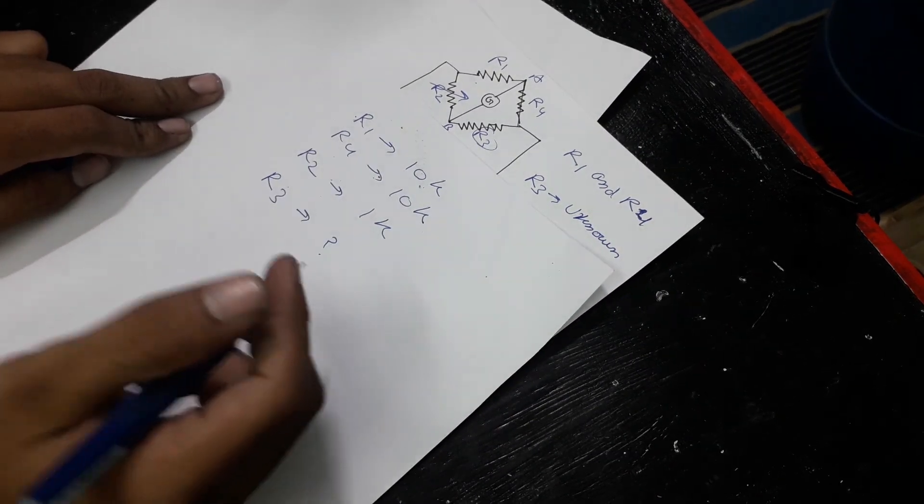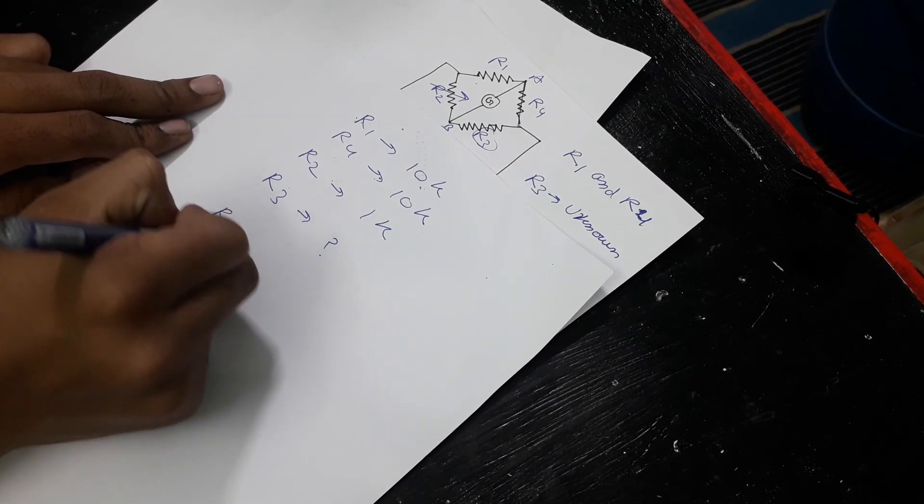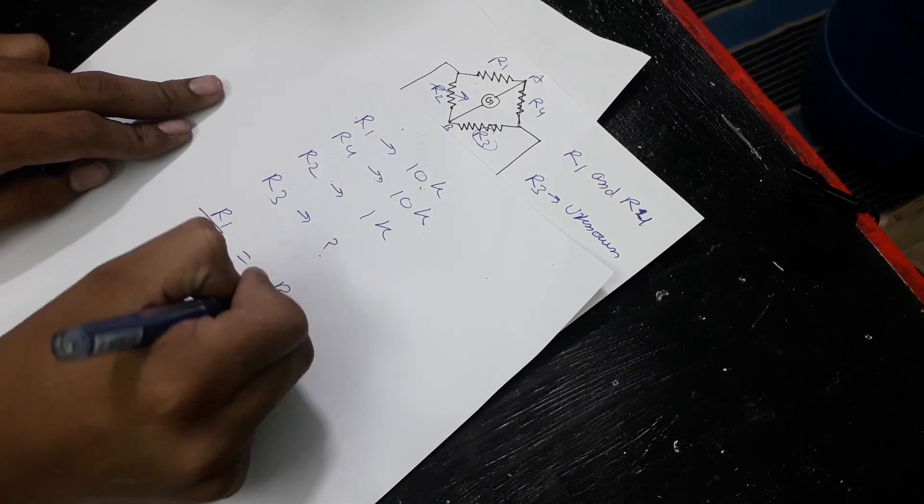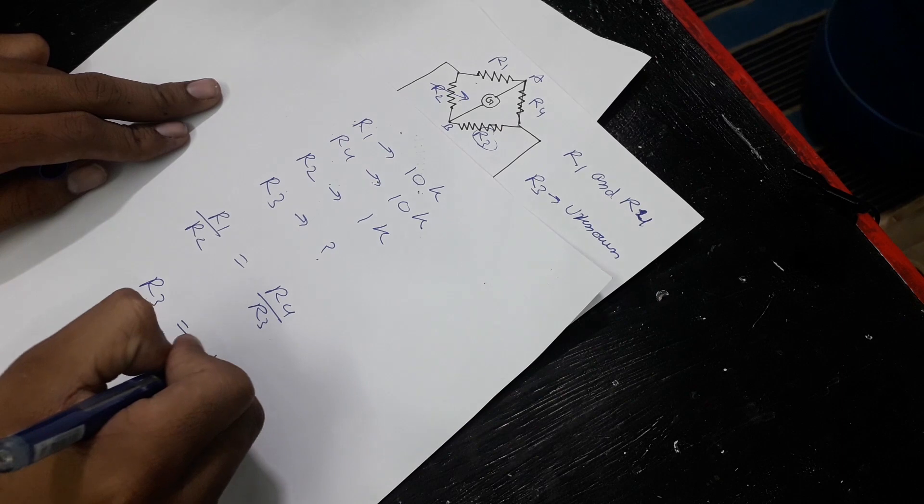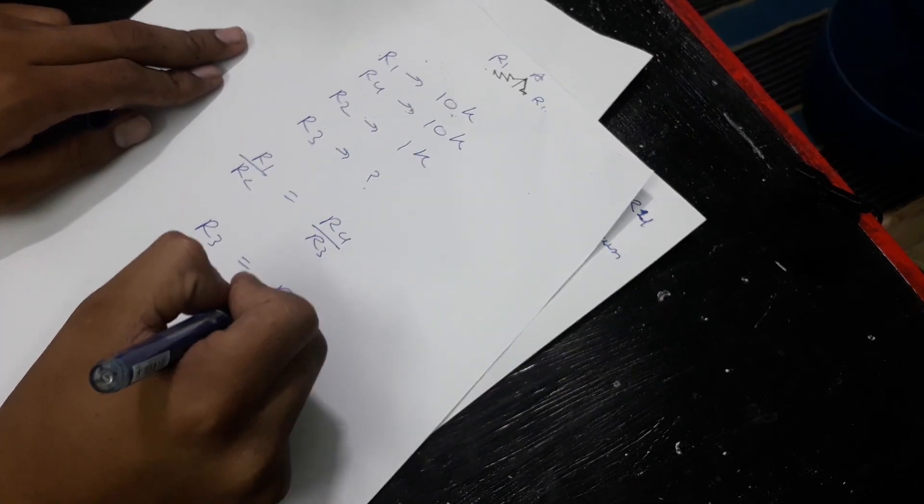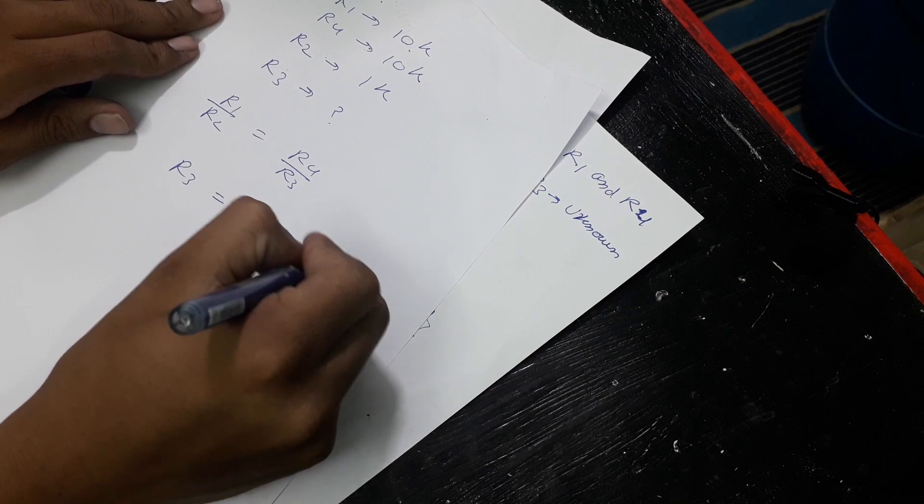So we know the formula: R1 upon R2 equals R4 upon R3. Therefore R3 equals R4 upon R1 times R2.